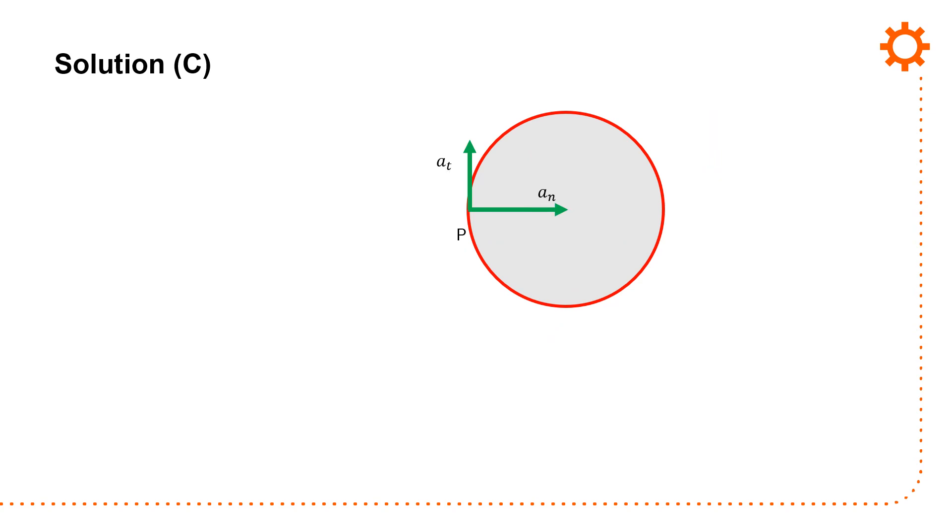And the last thing I'm asked for is the acceleration at point P. Acceleration at point P is going to have a normal component because it's traveling on a curved path, and it has a tangential component as well. So acceleration n is omega squared r, which is 26.7 meters per second squared when I substitute numbers. Acceleration tangential is going to be alpha 3 r3, which is 1.5 meters per second squared.